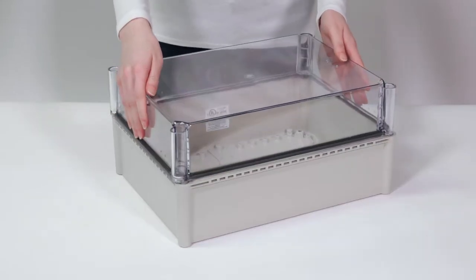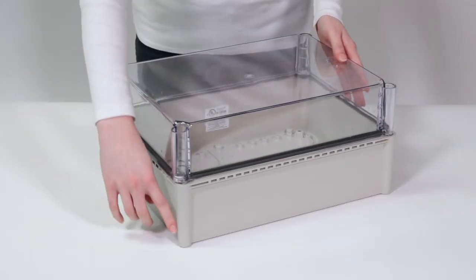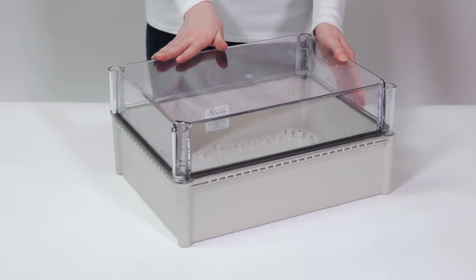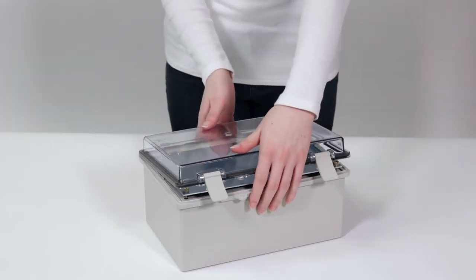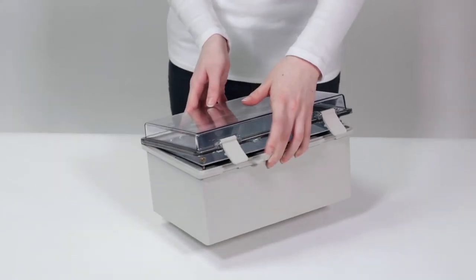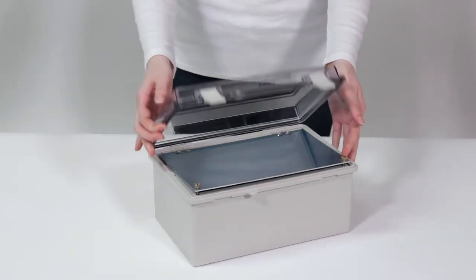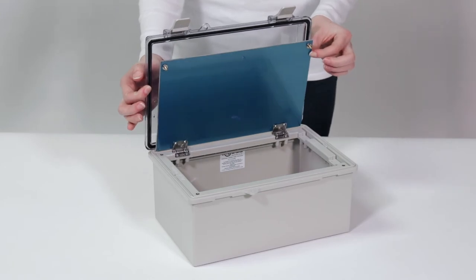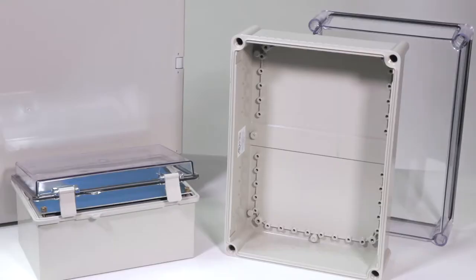For a screw-down cover and non-metallic fasteners, choose an NB-D model. Meanwhile, the NB-E series offers non-metallic hinges and latches along with an aluminum swing-out panel for mounting components.